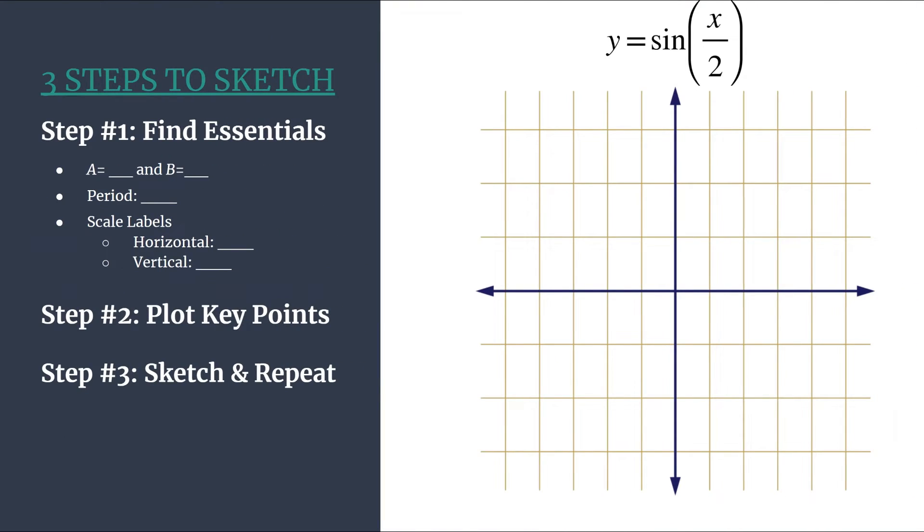So we have our outline method, we have our equation and our grid, and before we even start our three-step method, it's helpful to rewrite this equation so that we can clearly see our b value.